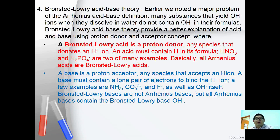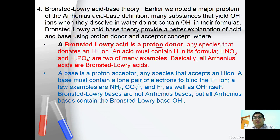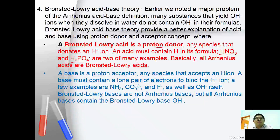Bronsted-Lowry acid-base theory. A major problem with Arrhenius acid-base theory is that many substances yield OH- ions when dissolved in water but do not contain OH- in their formula. Bronsted-Lowry acid-base theory provides a better explanation of acid and base using the proton donor and acceptor concept. A Bronsted-Lowry acid is a proton donor — any species that contains H+, for example HNO3 and H2PO4-. Essentially, all Arrhenius acids are Bronsted-Lowry acids.